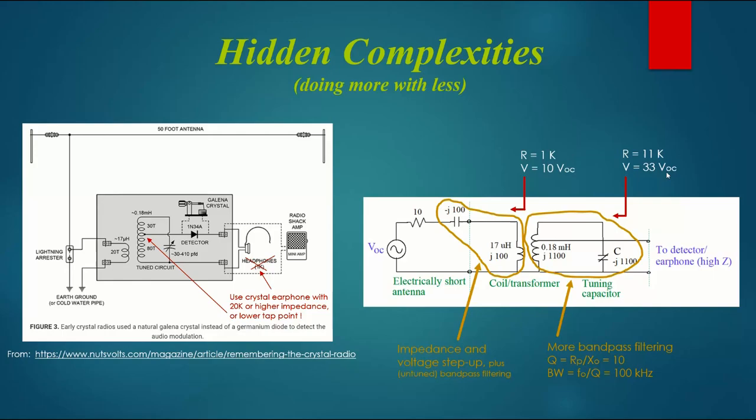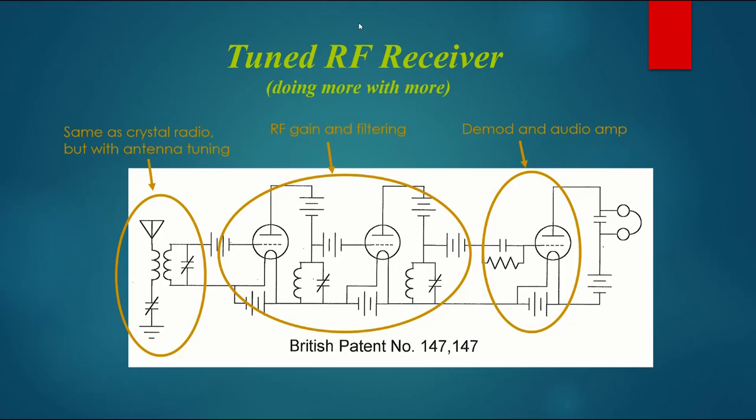That impedance transformation is associated with a voltage step up. We get a voltage step up even to the primary of this transformer. Then we go through the transformer itself with another voltage step up about 3.3. So the voltage at this point is about 33 times the open circuit voltage. Even without transistors or tubes, we've amplified the signal. One important note: this drawing has an error. We shouldn't use 1k ohm headphones. Originally these used high impedance crystal earphones about 20k. That's important because we're only at 11k level here. You need to make sure you don't load it too much or the bandpass filtering will be destroyed.